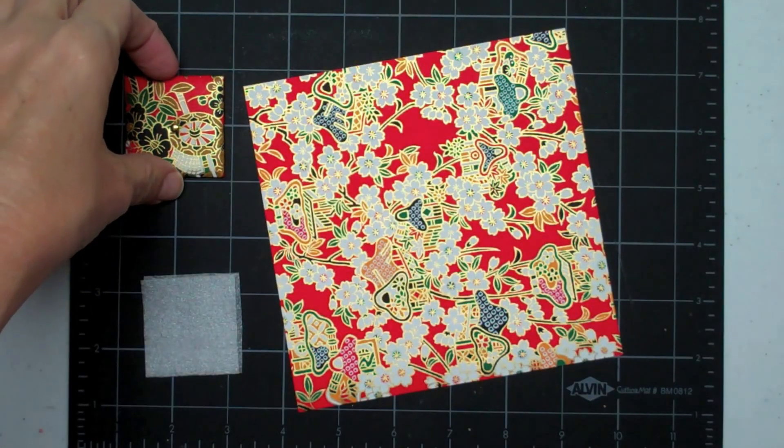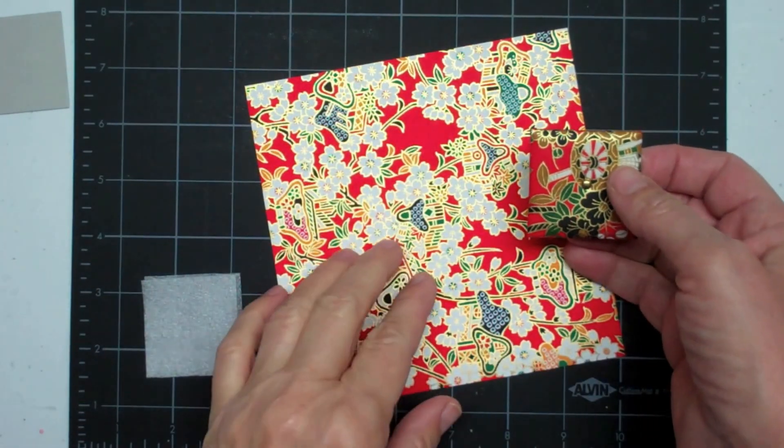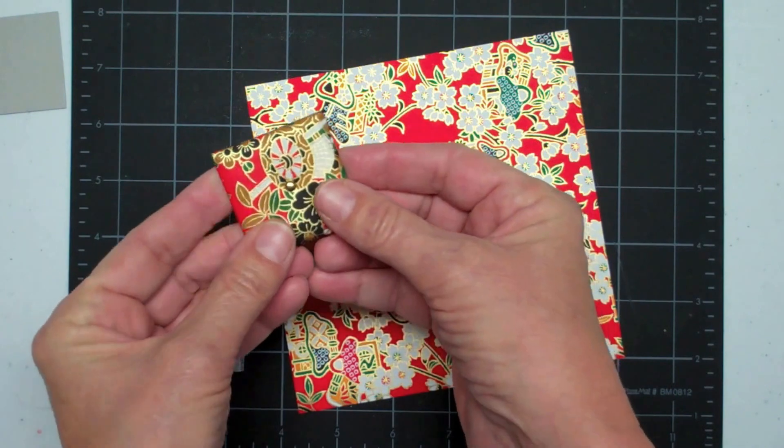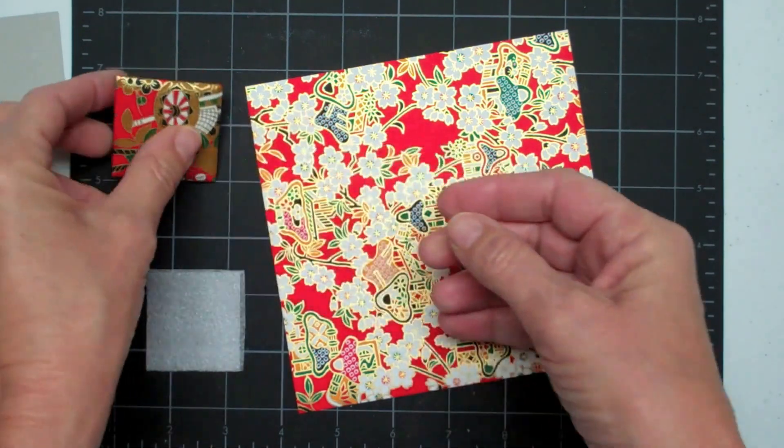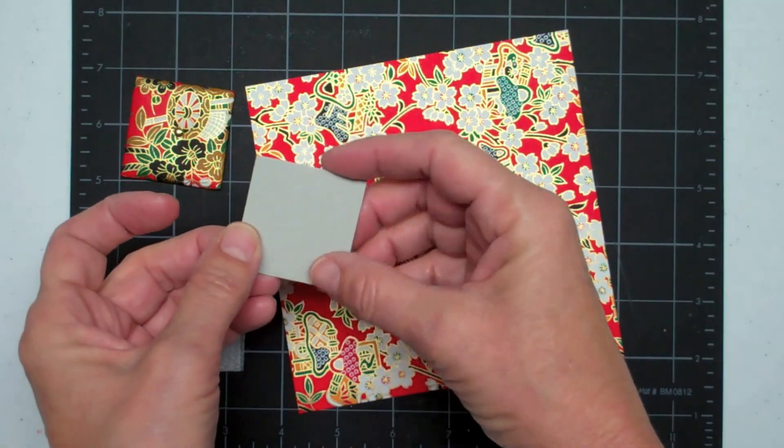Today we're making a very cool card using paper and chipboard. We're going to make these little padded pillow shapes. I cut out a sheet of chipboard one and a quarter inch square.